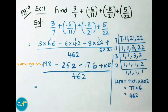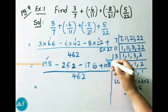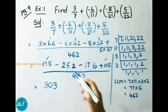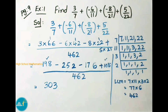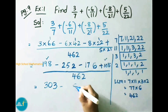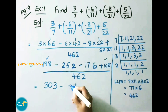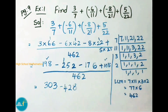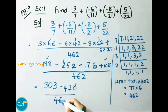We shall do addition of 198 and 105, which equals 303. Next, minus 252 and minus 176 — these two numbers have the same sign (both negative), so we add them and keep the minus sign. 252 plus 176: 6 plus 2 is 8; 7 plus 5 is 12, write 2 carry 1; 1 plus 2 is 3, plus 1 is 4. So 252 plus 176 is 428. Write down denominator 462.